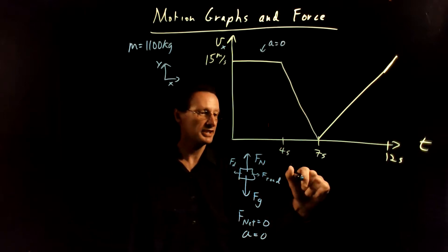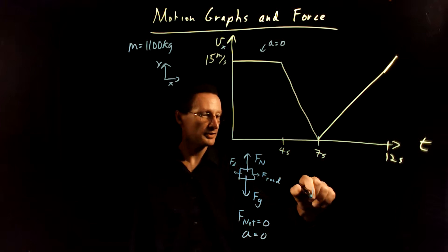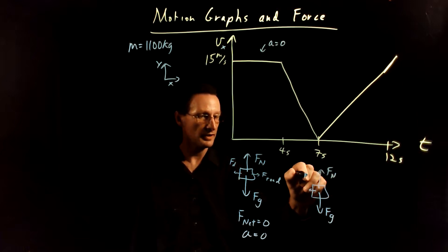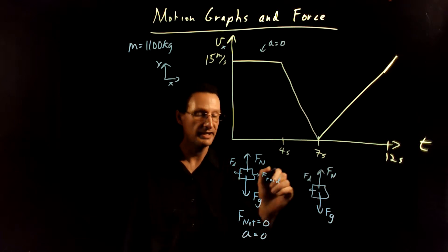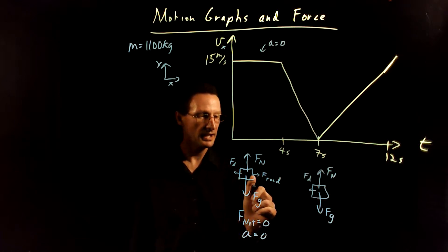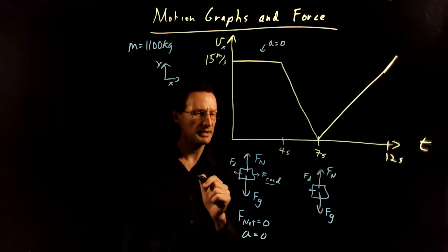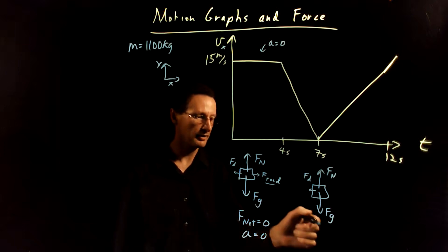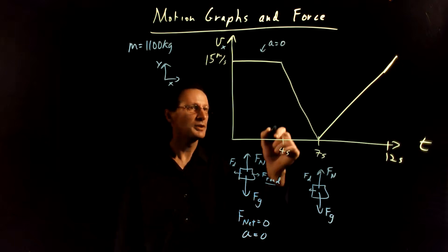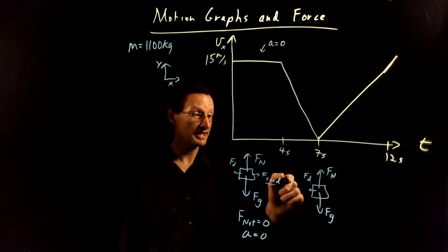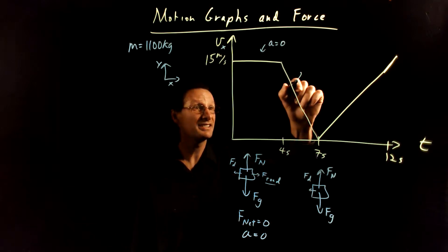What about in this situation — the braking phase? Let's draw the free body diagram again. There's going to be the normal force and the force from gravity, and we'll draw the drag force again. Even though we're slowing down, that drag force is going to vary — forget about that for right now. We see that the slope is negative and constant, so the acceleration will be negative and constant.